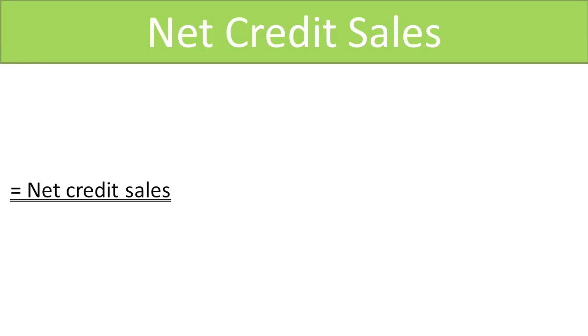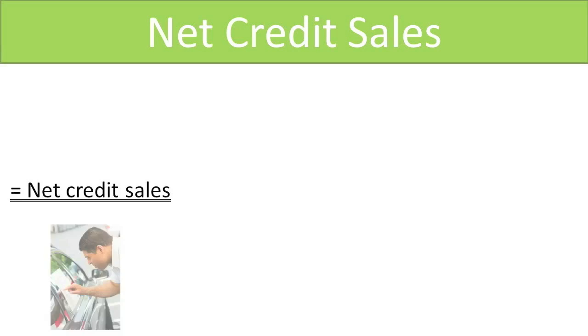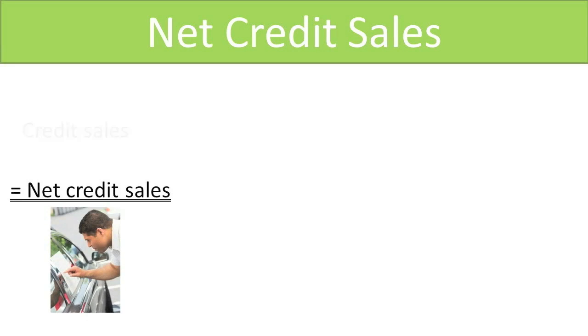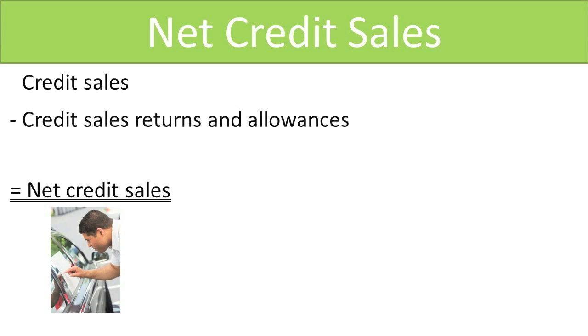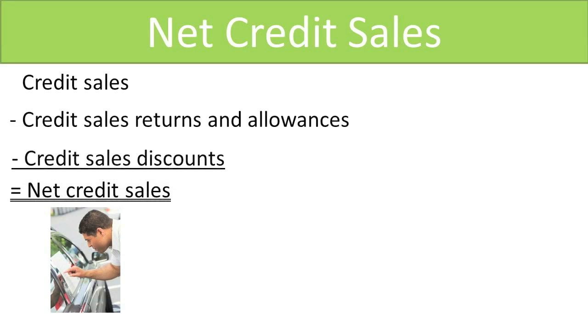Net credit sales represent all sales made on account — i.e., credit sales — less any returns and allowances on credit sales, and less any sales discounts on credit sales.